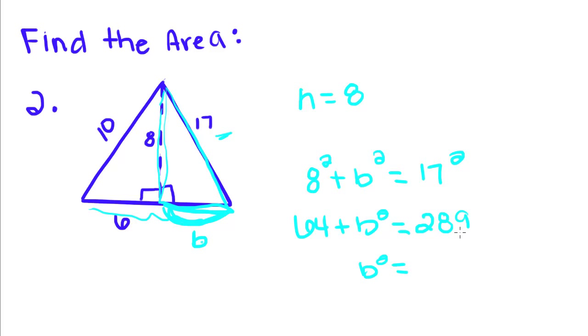So B squared is equal to, we're going to subtract the 64 over, and we'll get 225. And if you take the square root of that and put it into a calculator, you get B is equal to plus or minus 15. Now if you remember, this is a distance. We can't have negative distance, so we're just going to take the positive value of B. So this is 15.